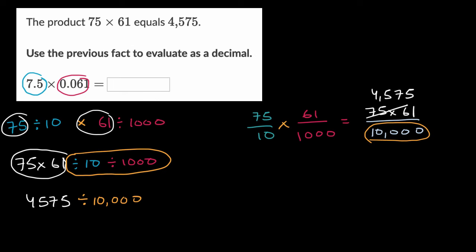So how do we write that? Well, if I have a decimal right over here, that's the tenths place. This is the hundredths, thousandths, ten-thousandths place. So we have this many ten-thousandths, 4,575 ten-thousandths. And we're done. So this is going to be 0.4575.